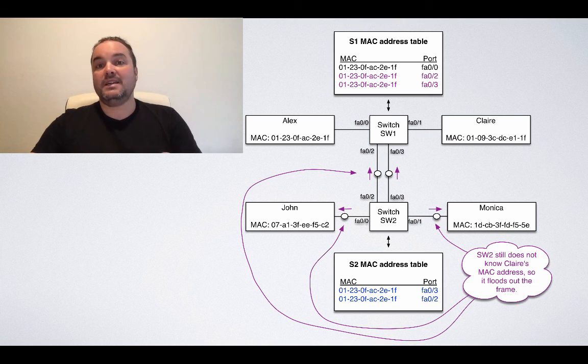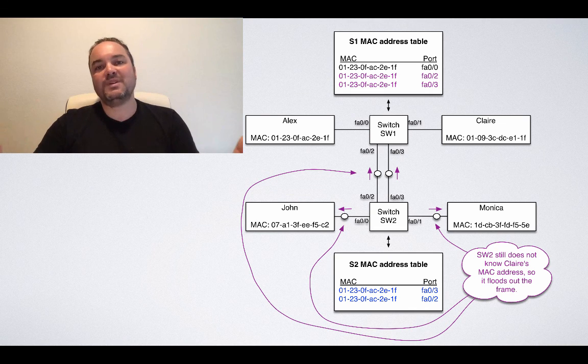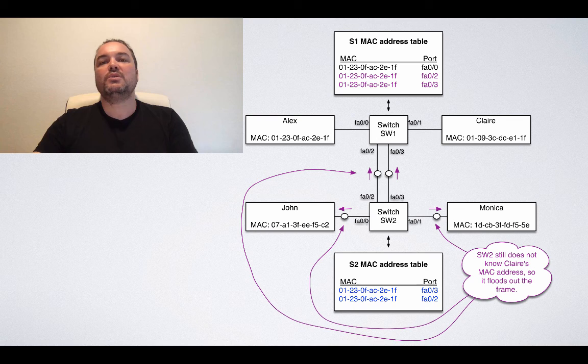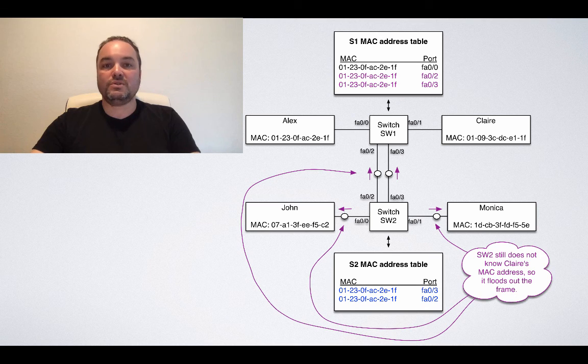But again, that's not even the worst. The worst in all this is that the frame goes out again on FA02 and FA03 to SW1, and once it reaches SW1, guess what happens? That's right. SW1 floods it back out again to SW2, and that's how this frame is going to bounce forever between SW1 and SW2, creating what we call a Layer 2 data link broadcast storm, wasting valuable compute resources and bandwidth on all servers and switches in the network.